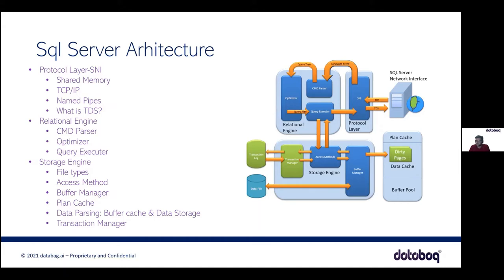Going to SQL server architecture — it's a client-server based architecture, where the client asks the server for some request, the server accepts, processes, and responds. Here we have the SQL Server Network Interface which communicates through the protocol layer. The protocol layer, as the name suggests, is a set of rules that any information processed inside the server must follow. The protocols present in all RDBMS architectures are: shared memory, TCP/IP, and named pipes.